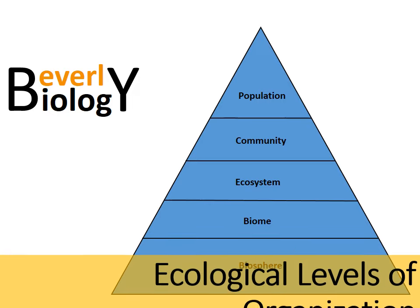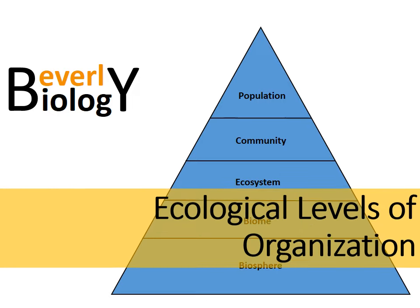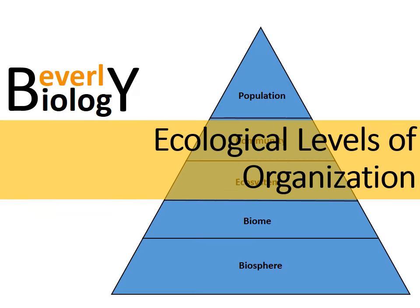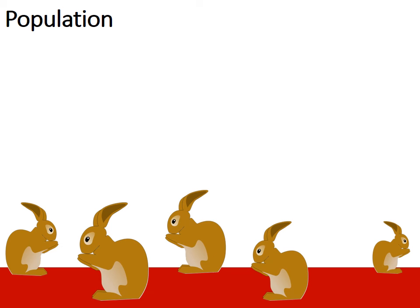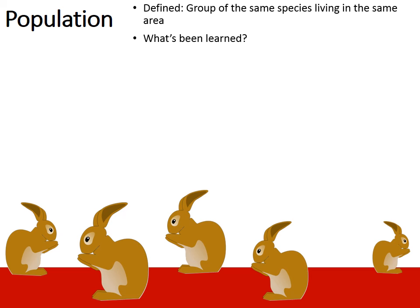In this quick video we're going to go over the ecological levels of organization. Let's start with the most basic level of ecological organization, which is called a population. In the picture we have a bunch of rabbits here, and this would be an example of a population — it's a group of the same species all living in the same area.